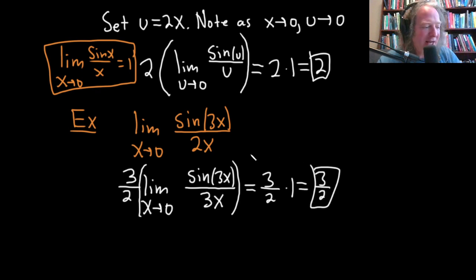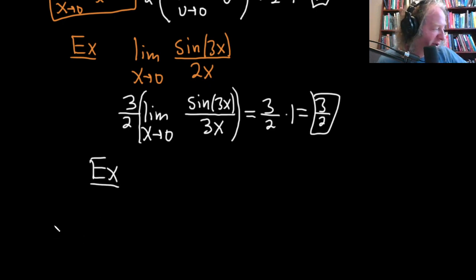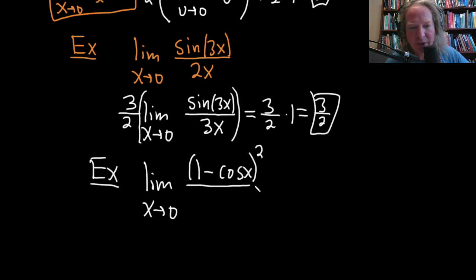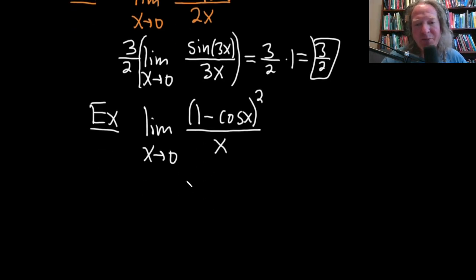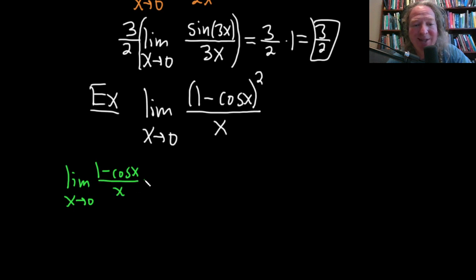Let's switch gears and do an example for the other formula. Here's one: the limit as x approaches 0 of 1 minus cosine x squared over x. The other formula was the limit as x approaches 0 of 1 minus cosine x over x, which equals 0.